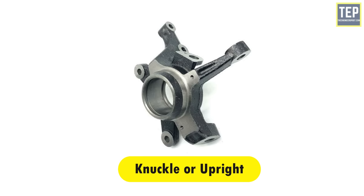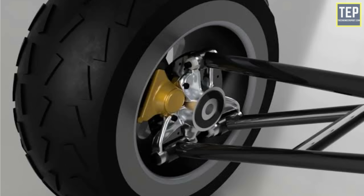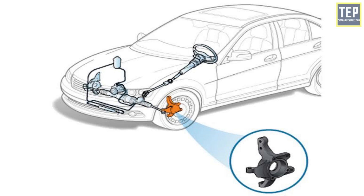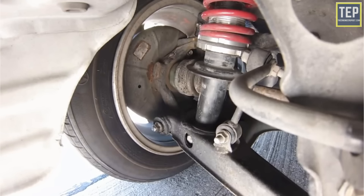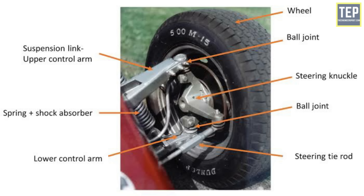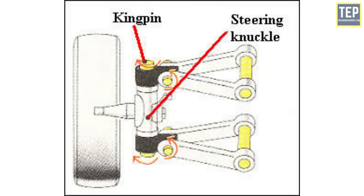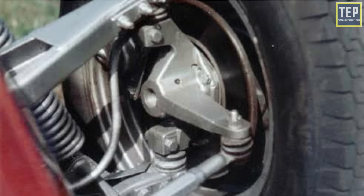The knuckle or upright is used to connect the wheels to the suspension system. The knuckle arm is positioned at the front wheel of the car. The wheels rotate continuously on the spindle shaft that comes from the knuckle arm, and it is also connected to the lower arm using a ball joint. The knuckle has a caster angle and a king pin on the front wheels, which helps in steering the vehicle left or right.